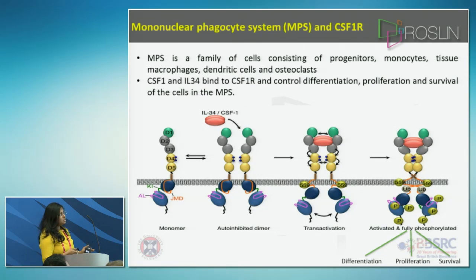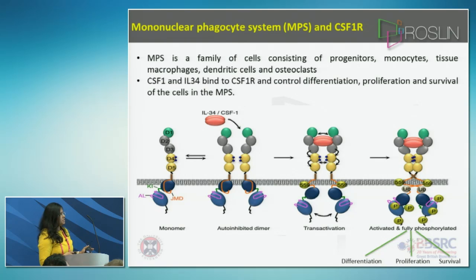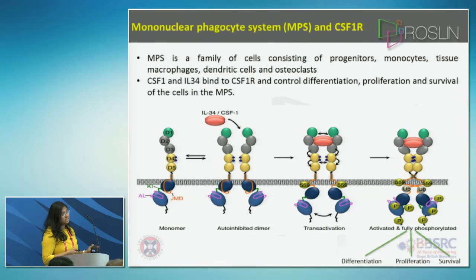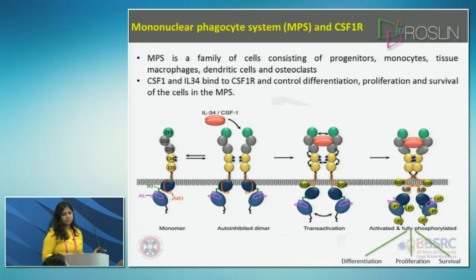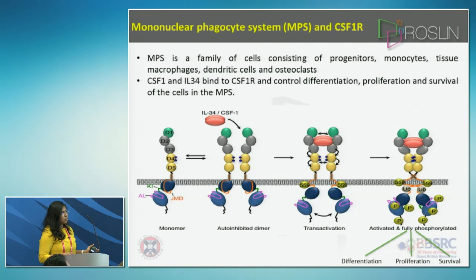The two cytokines, IL34 and CSF1, bind to different regions of the receptor. This is the structure of the CSF1R receptor, which consists of the extracellular domain, the transmembrane domain region, and the intracellular domain. CSF1 binds to domains 2 and 3 of the receptor, bringing about dimerization at domains 4 and 5, which brings about phosphorylation of tyrosine residues present in the intracellular membrane. This signaling mechanism brings about differentiation, proliferation, and survival of these cells.